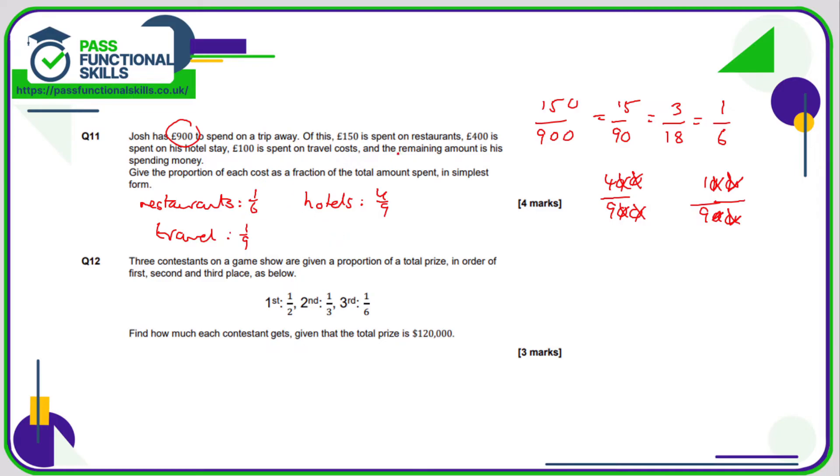We need to work out the spending money. We can work out that the remaining is spending money. So 900 minus 100 minus 150 minus 400 gives us 250. So the spending money is going to be 250 out of 900, otherwise known as 25 out of 90.